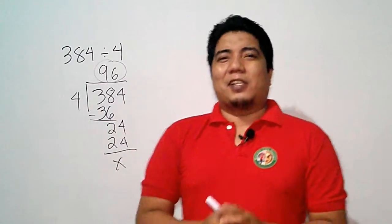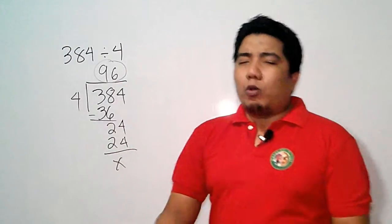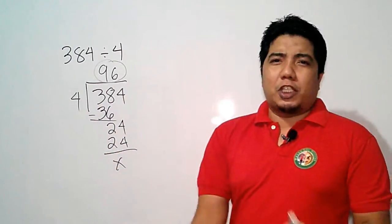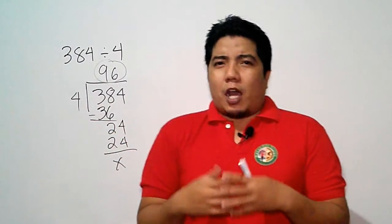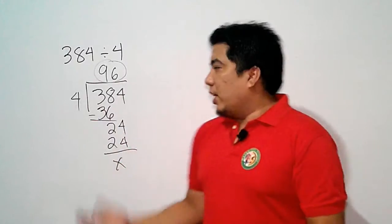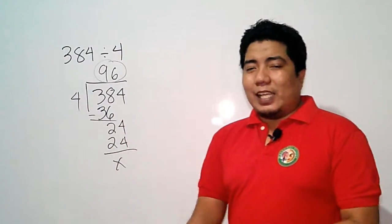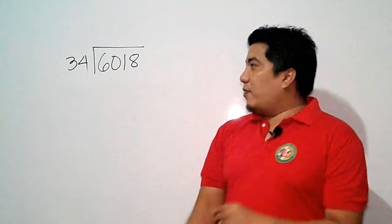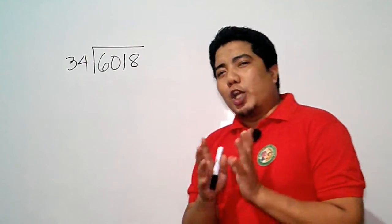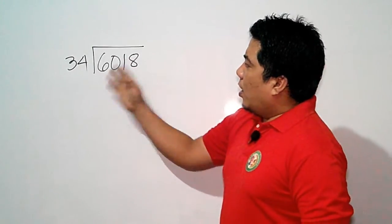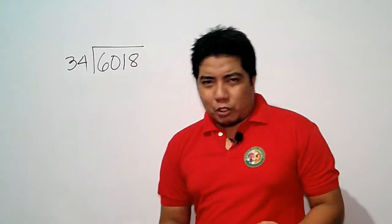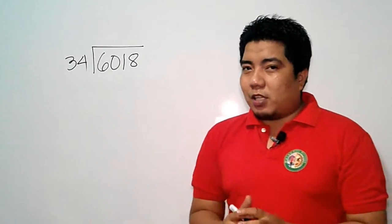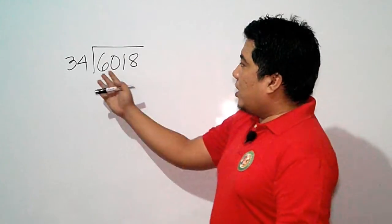However, difficulty arises for most students when dealing with big numbers or divisors with 2 digits, 3 digits, and so on. So the question is: do we have any method that could help us divide numbers easily, especially those 2-digit numbers? Let's consider another example: 6,018 divided by 34. Since this is ML with Sir Ash, I'm going to teach you some tips on how to easily divide these numbers.